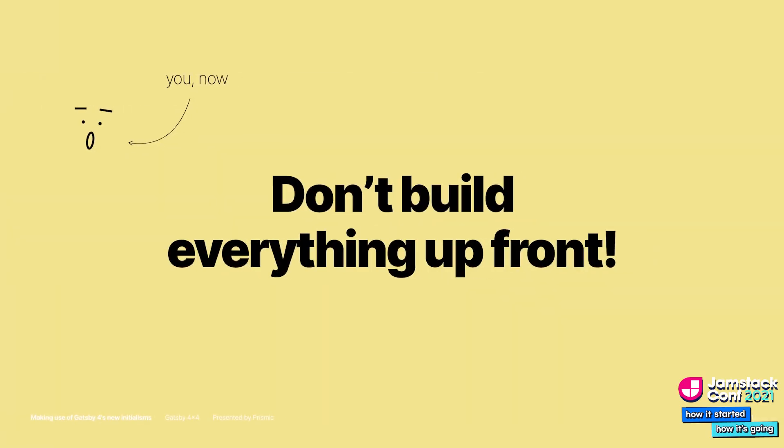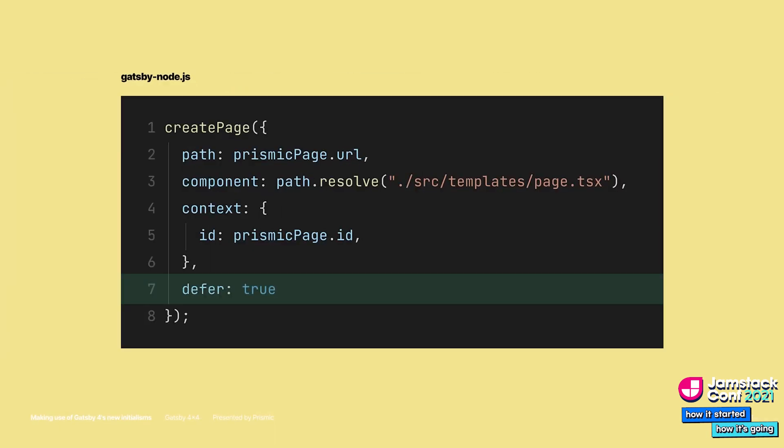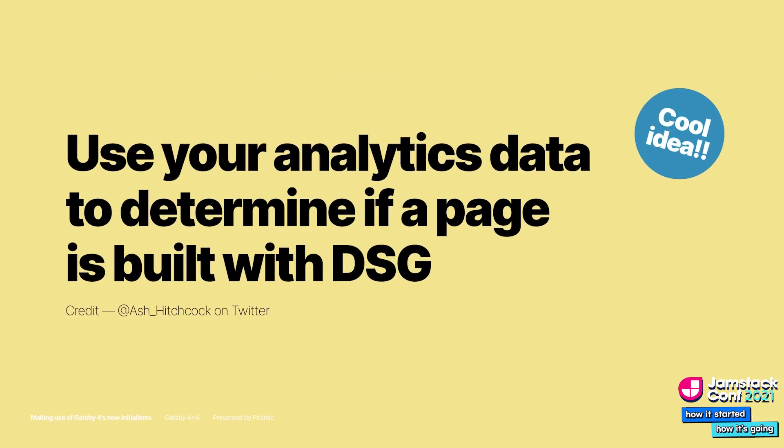So how do we fix this? Don't build everything upfront. Any page that is not accessed often, like old blog posts, can make use of deferred static generation. Just add deferred true to your create pages call where it makes sense. You could use your analytics data to determine this — for instance, pages with less than 100 views in the last month don't need to be built upfront.